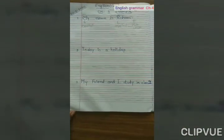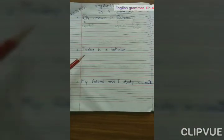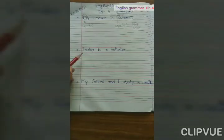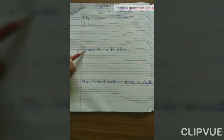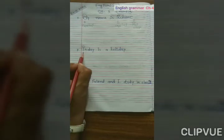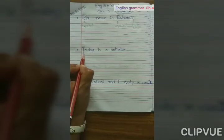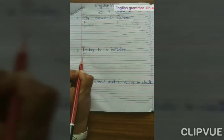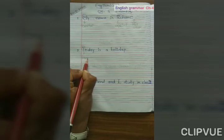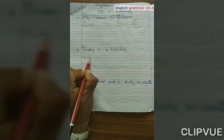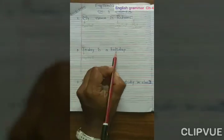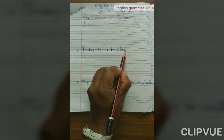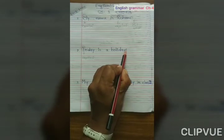Second sentence: Today is holiday. T is the first letter, so T should be capital. Today is holiday — full stop.